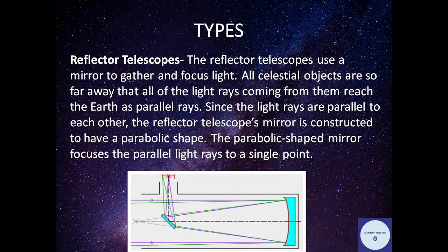Since the light rays are parallel to each other, the reflector telescope's mirror is constructed to have a parabolic shape. The parabolic-shaped mirror focuses the parallel light rays to a single point.